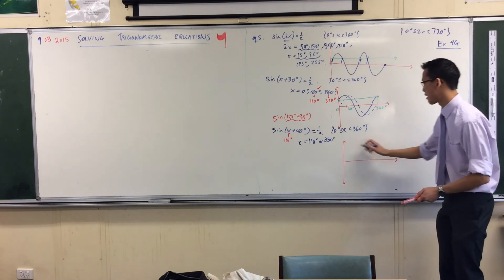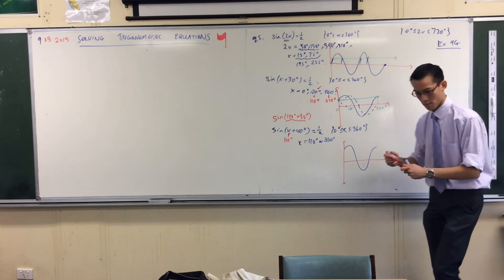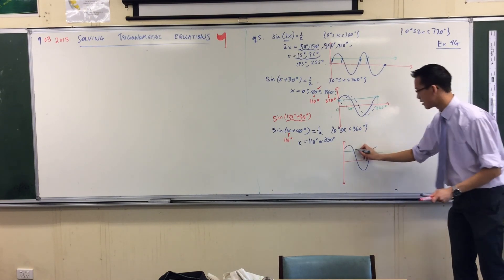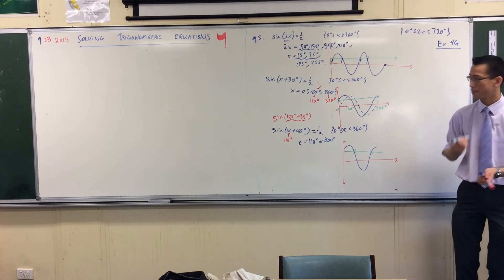And you can verify that by graphing it. I'm going a little bit further. So now, wrong color. Now my line of y equals a half only intercepts twice, just like it normally would in that domain.